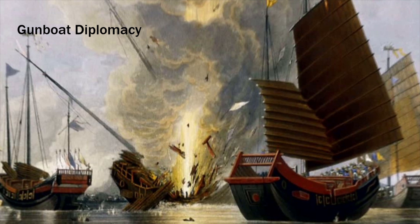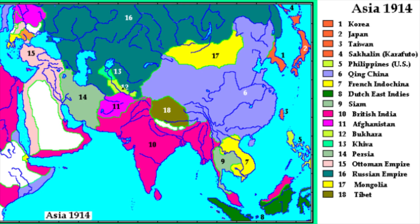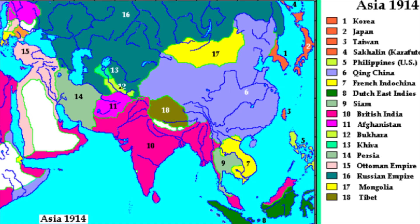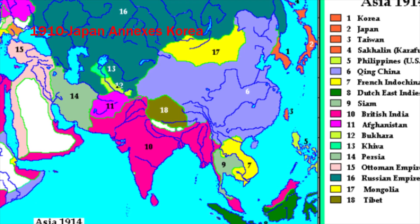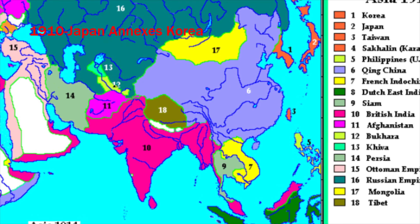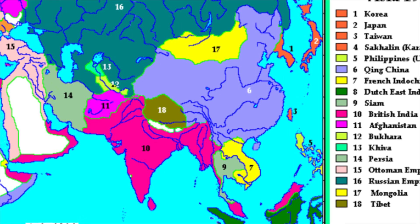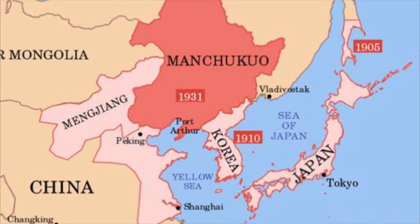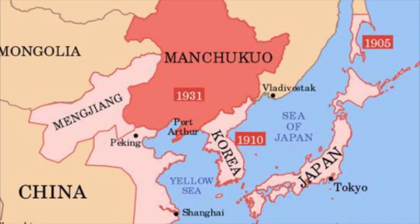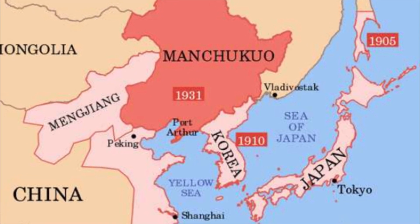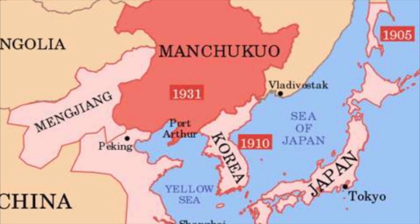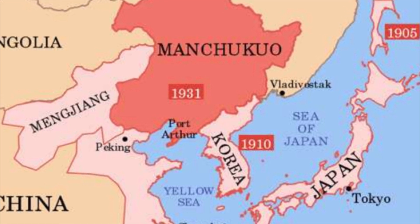Since 1876, Korea became more and more intertwined with and influenced by Japan, and this influence culminated in the complete annexation of Korea by Japan in 1910. Korea was reduced to a colony, with hundreds of thousands of Japanese settlers flooding the country as farmlands were redistributed to the new settlers and Korean peasants.